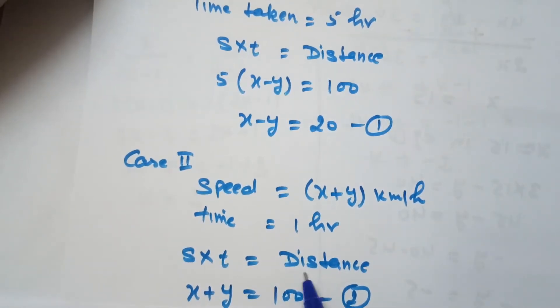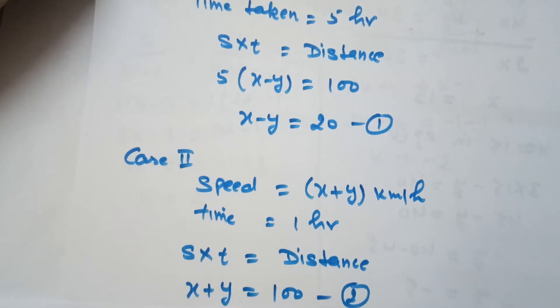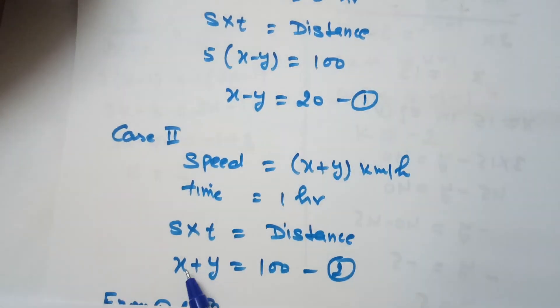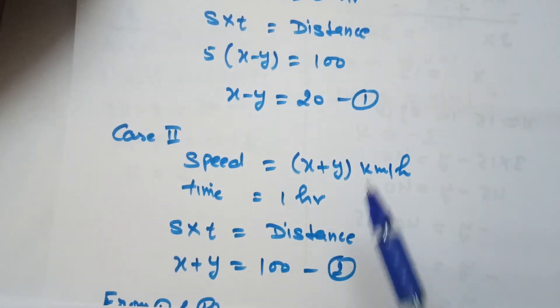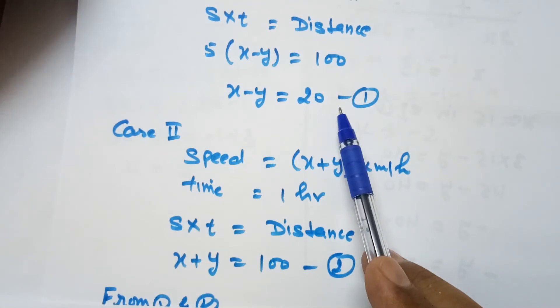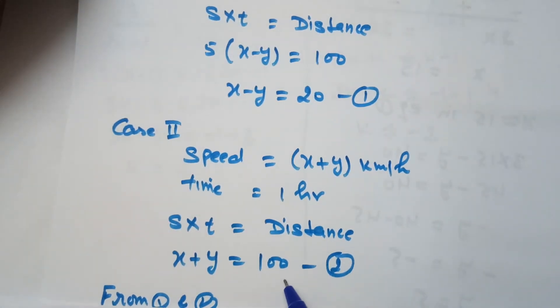Again using distance equals speed times time: time is 1 hour, speed is (x+y) equals 100. So first equation is x-y=20, and second equation is x+y=100.